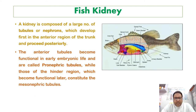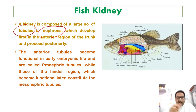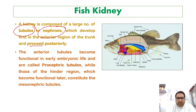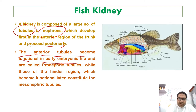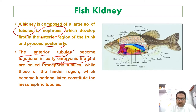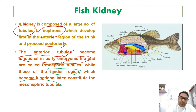The fish kidney is composed of a large number of tubules and nephrons. They develop first in the anterior region and proceed posteriorly. The anterior tubules become functional in the early embryonic stage and are called pronephric tubules. The hinder portion becomes functional later and is called the mesonephric tubule.